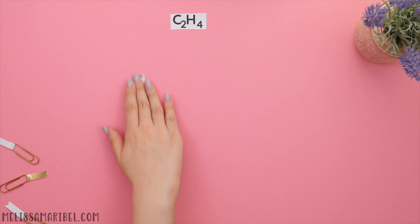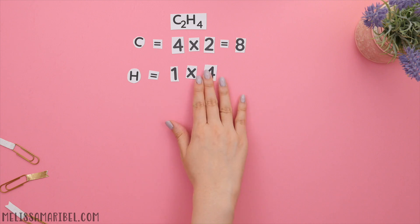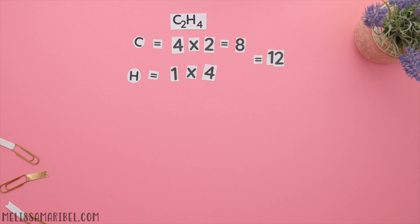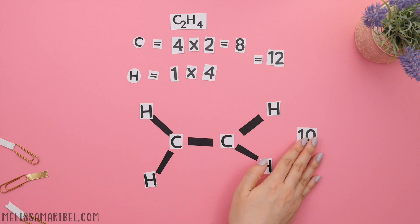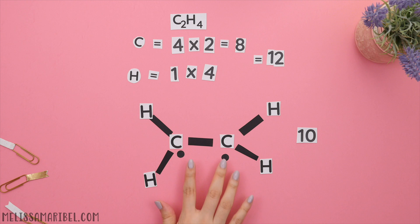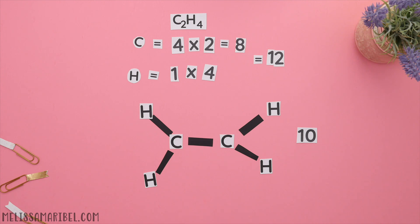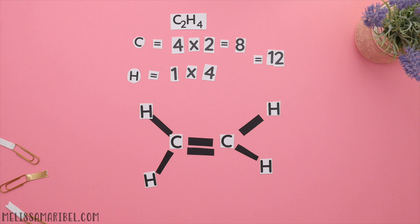Here's our second structure. Identify the total valence electrons: carbon has four times two, so eight. Hydrogen has one times four, so four. Eight plus four is twelve valence electrons. The carbons are central atoms surrounded by two hydrogens on each side. If we place single bonds and count up all the valence electrons we only have ten, but we need twelve. You typically won't see carbon with any lone pairs — you instead will see carbon with a higher bond, meaning a double or triple bond. Since we only need two more electrons, we will turn this single bond into a double bond. This obeys the octet rule since each carbon has four bonds, which is really eight valence electrons.